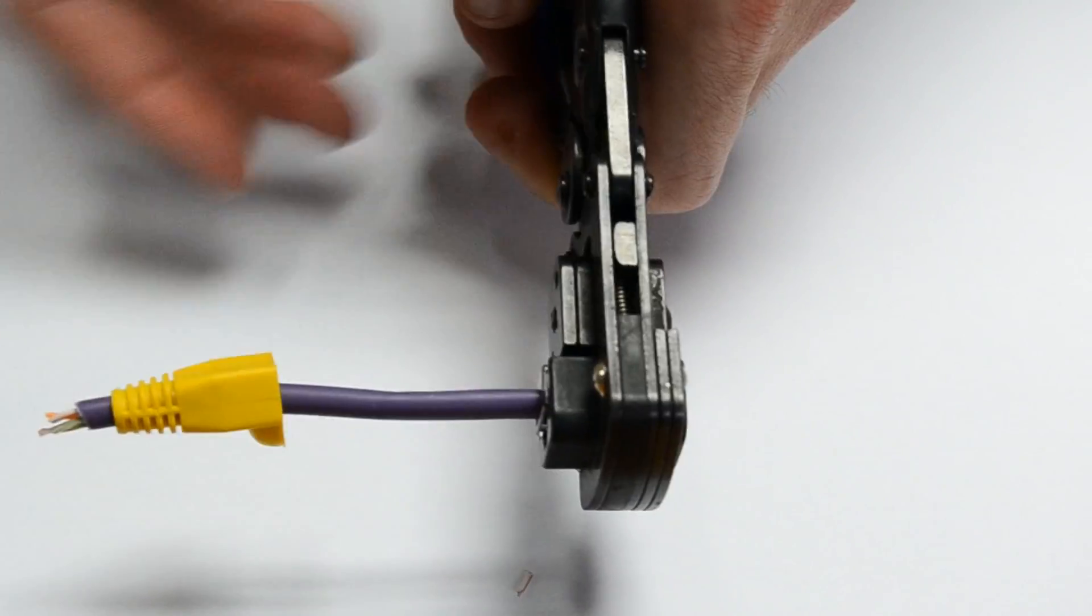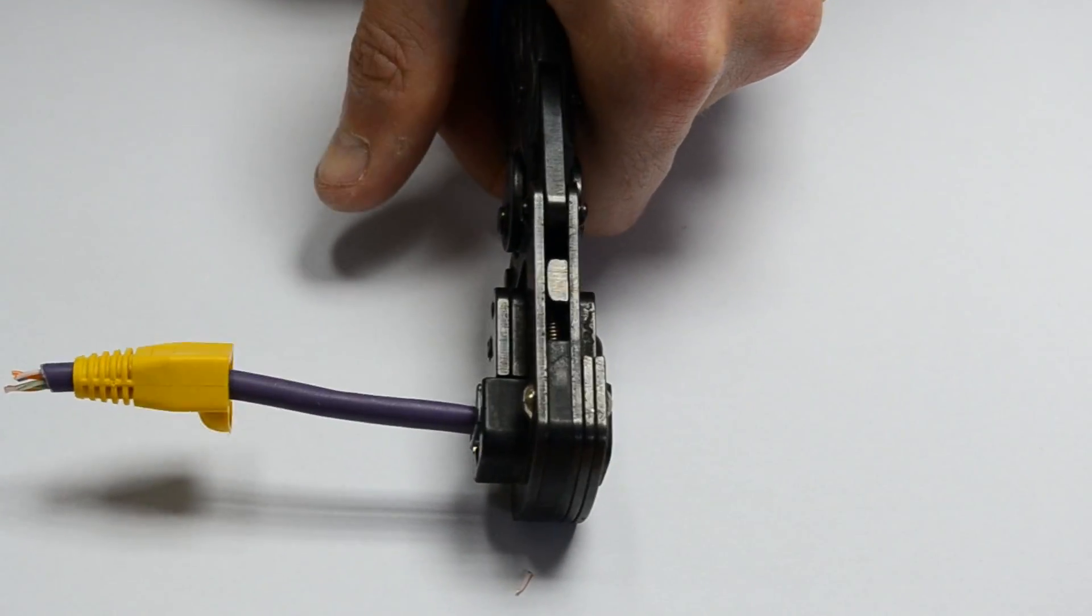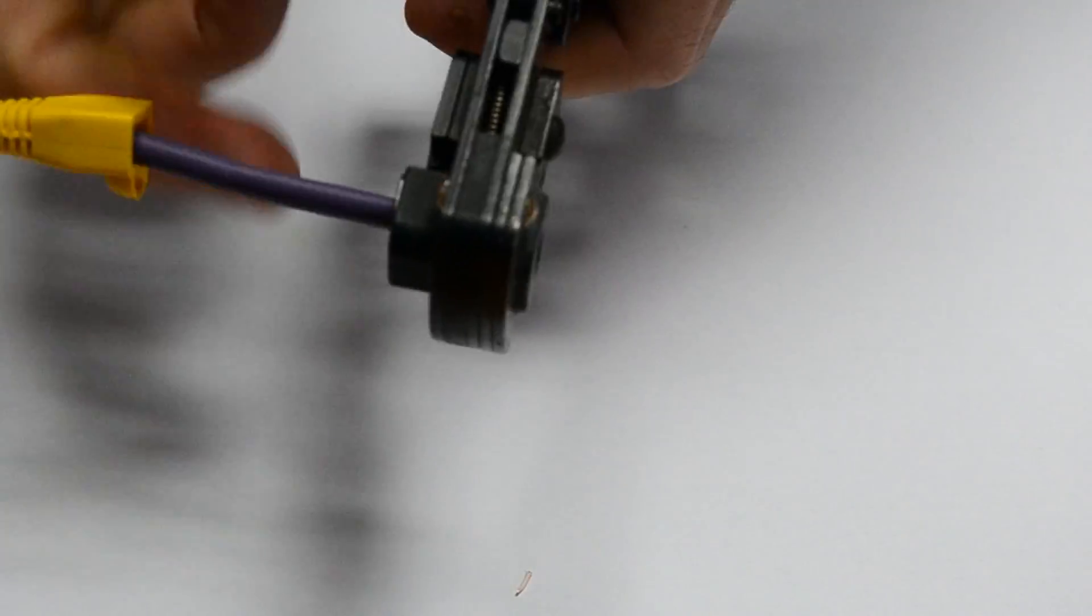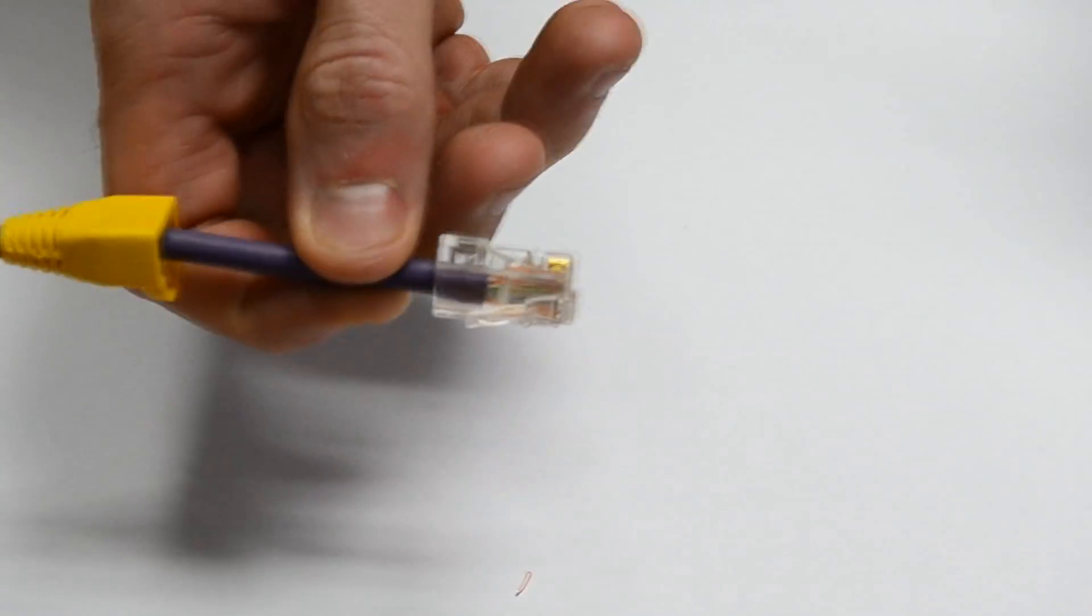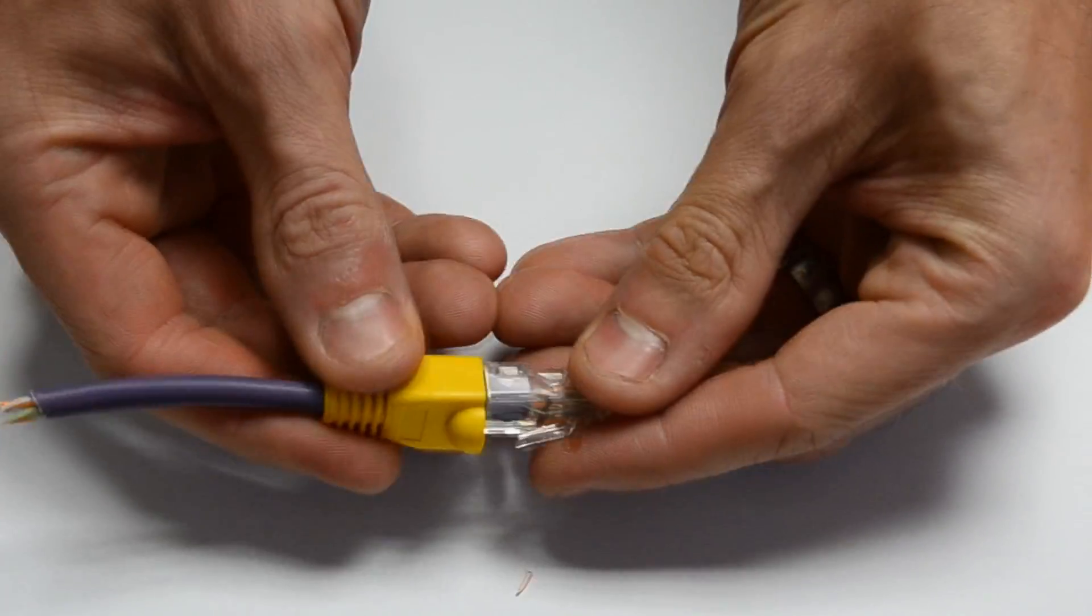Now we're going to put the RJ45 end into the RJ45 crimp tool and just clamp it down. What this will do is it will push all the gold pins up and actually clamp onto the eight individual cores inside.